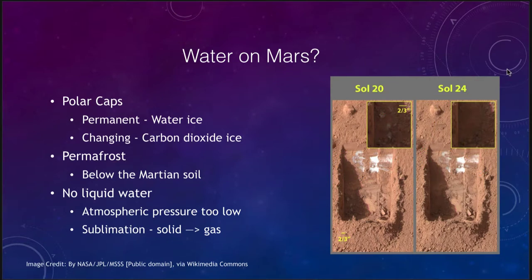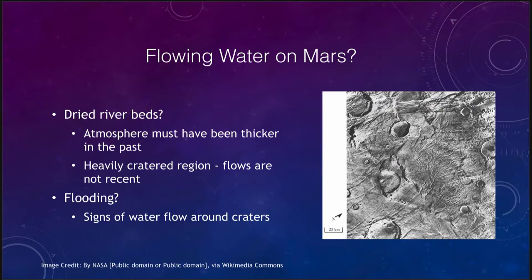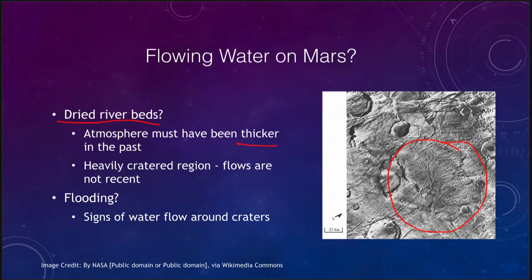Is there flowing water on Mars, or has there been? We do see evidence of dried riverbeds, with areas that look like various tributaries and channels that have been present on Mars, showing that water flowed in the past. We know that was a long time ago just from the number of craters we see around them. That means the atmosphere must have been thicker in the past, because under current conditions you could not have flowing water. You would need higher pressures and temperatures to allow water to flow on the surface.